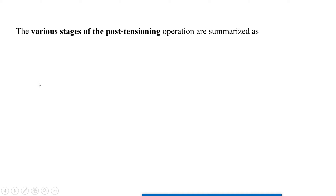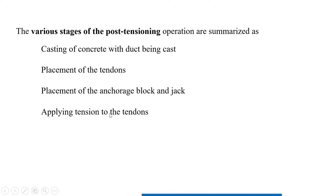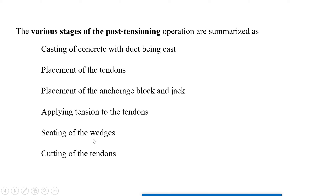The various stages of post-tensioning are: casting the concrete with the duct in place; placement of the tendons or steel wires through the duct; placing the anchorage block and jack; applying tension to the tendons — one end anchored, pull applied from the other; seating of the wedges; cutting the tendons once sufficient tension is applied and both ends are anchored; then filling the duct with grout for proper bond and load transfer.